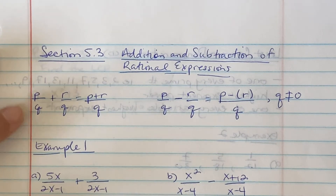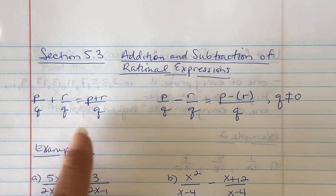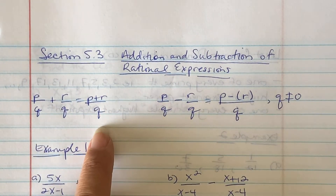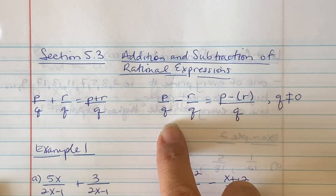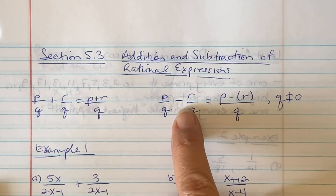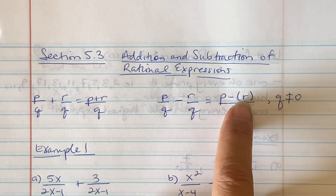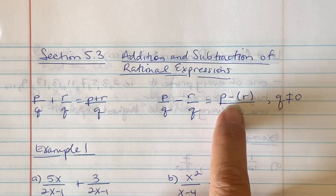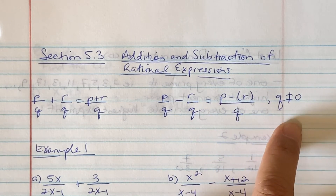So we have p over q plus r over q. Since the denominators are the same, we can just write p plus r over q. With subtraction, we have p over q minus r over q. Subtraction is a little different than addition — because the top piece could be a binomial or trinomial, we put parentheses around that second part: p minus (r), divided by q, where q cannot be zero.